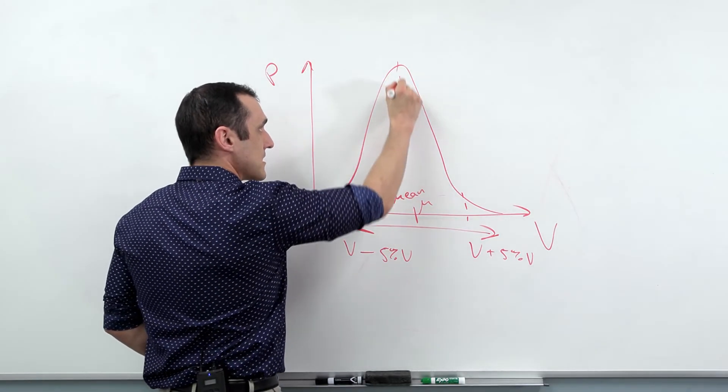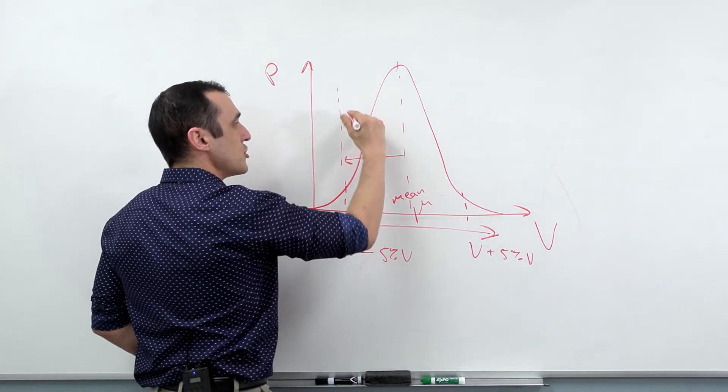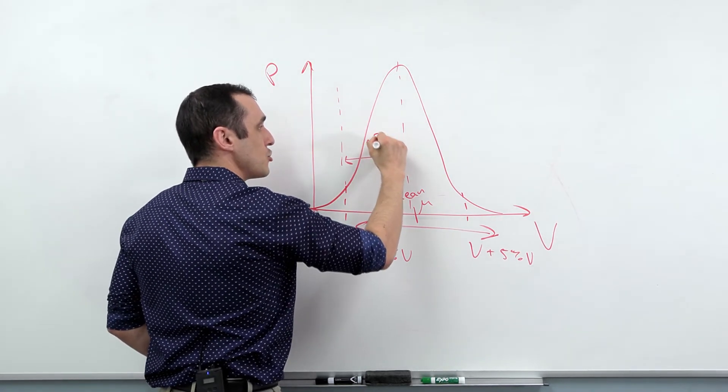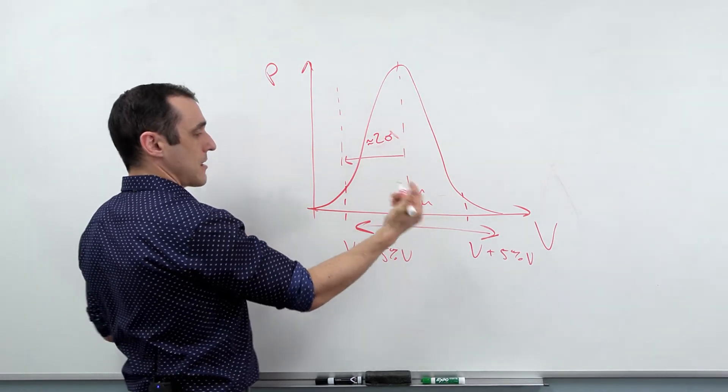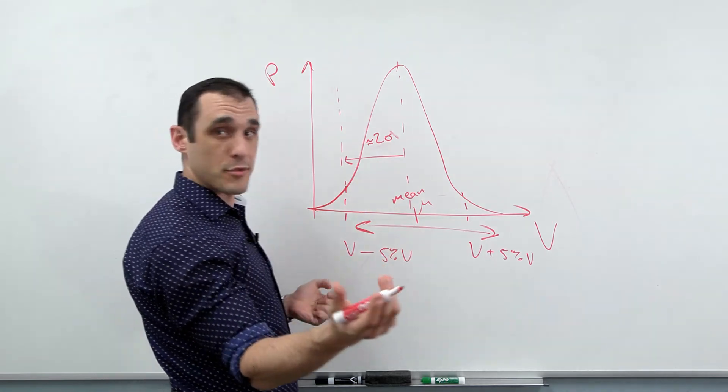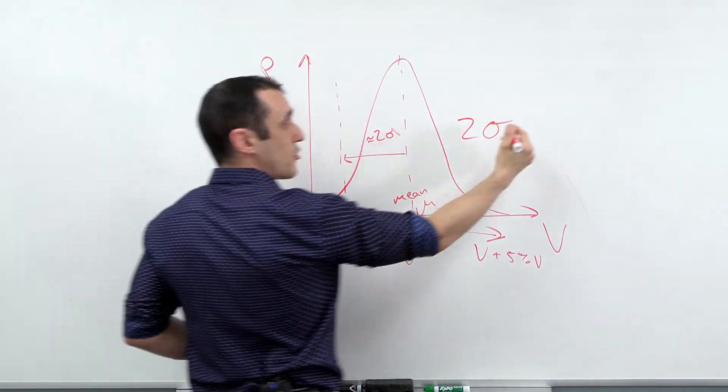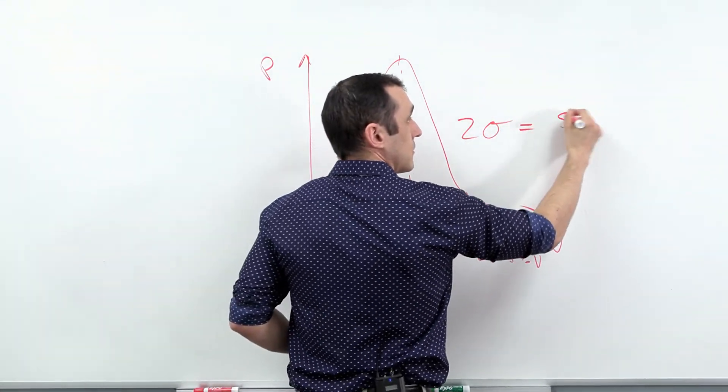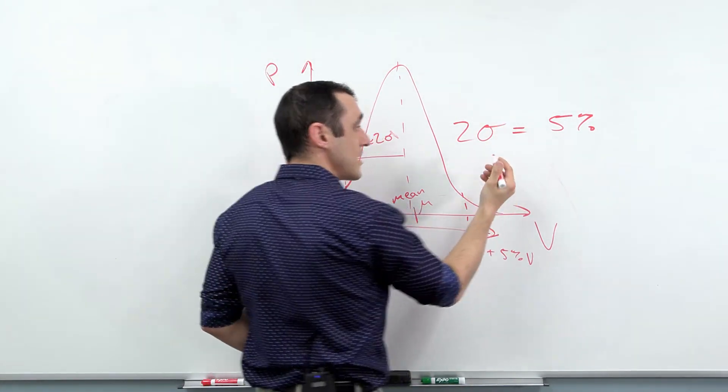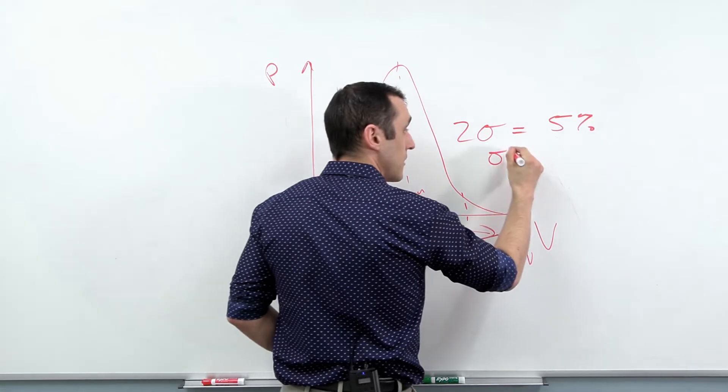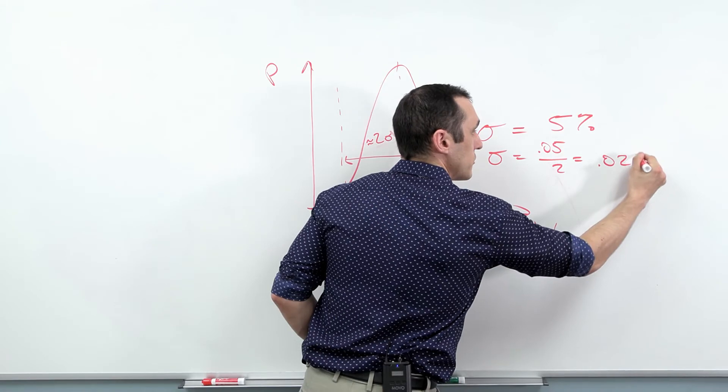Let's just assume for a moment that we're dealing with like a 5% tolerance component, like a 5% resistor. This is where these values would sit. What this means is that this distance from the mean over to here is just about two standard deviations. So if we know that our component, let's say in this case, it's a 5% resistor, it has 5% variation, then two sigma is just going to be 5% in this case. So our sigma or our standard deviation in the component values is going to be 0.05 divided by two or 0.025.